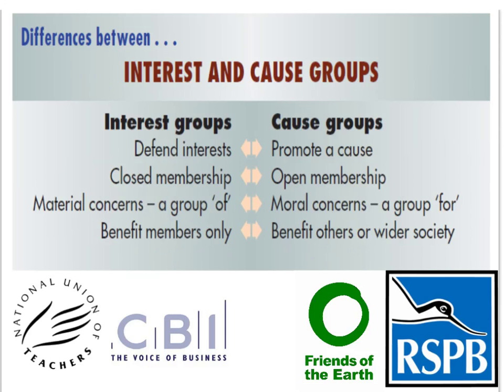As there are so many different types of pressure groups, it's helpful to put them into categories. One really important distinction is between interest groups and cause groups. Interest groups defend the interests of their members or a particular section of society. For example, the National Union of Teachers is a trade union defending the interests of a particular group of workers, and the CBI — the Confederation of British Industry — represents the interests of business and employers in Britain.